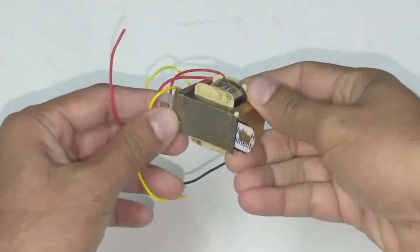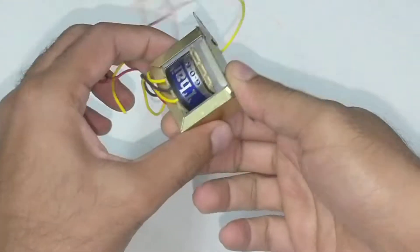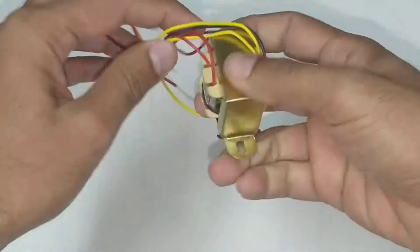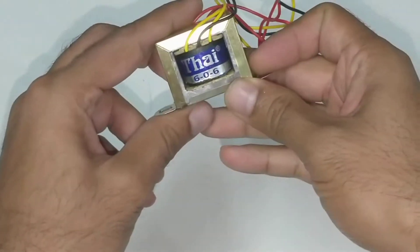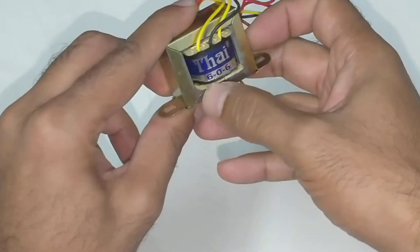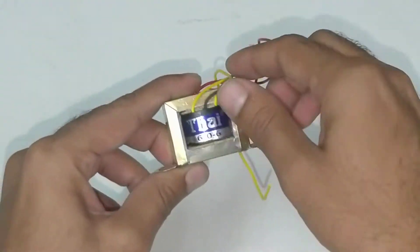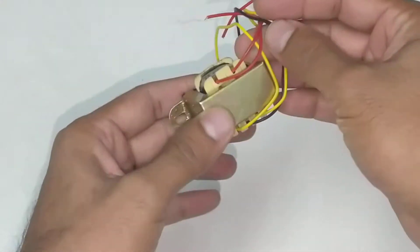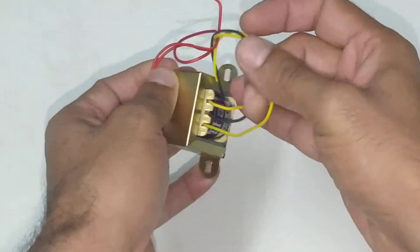I want to show you a typical transformer and how it looks. This is a 6-volt center tap transformer, 6-0-6, and typically gives about 300 milliamps of current.